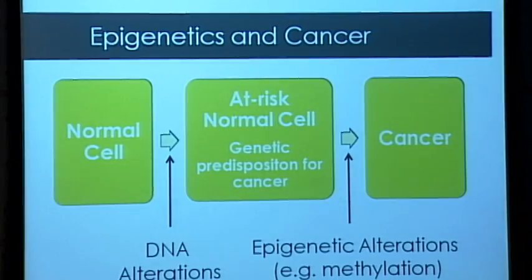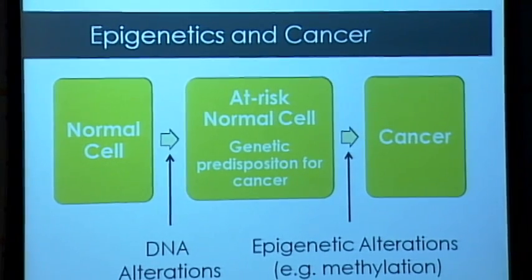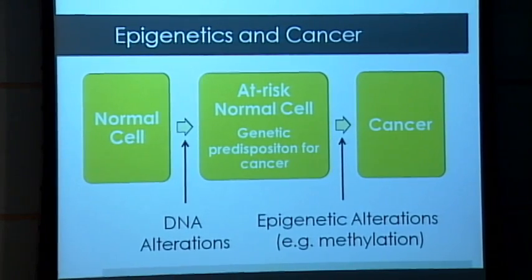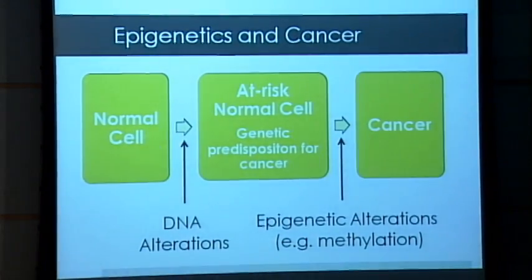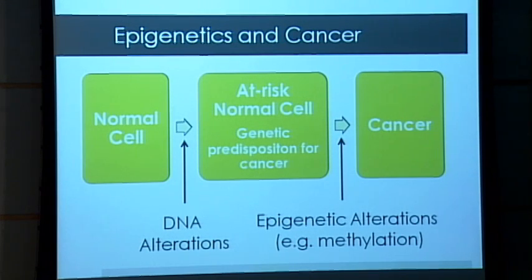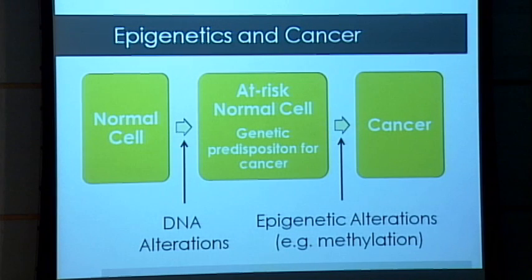To give you context of where epigenetic regulations come in: this is a model of the progression of normal cells into cancerous cells. Normal cells can acquire DNA mutations which make them genetically prone to becoming cancerous, but they're not cancerous yet. They need a green light — an on switch — to make them into cancerous cells, and that's what these epigenetic alterations are. I'm looking at the protein that's telling these predisposed cells to go ahead and start rapidly dividing.